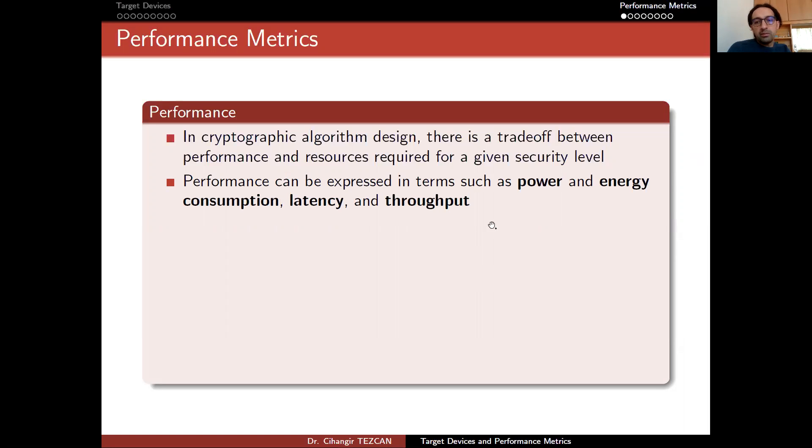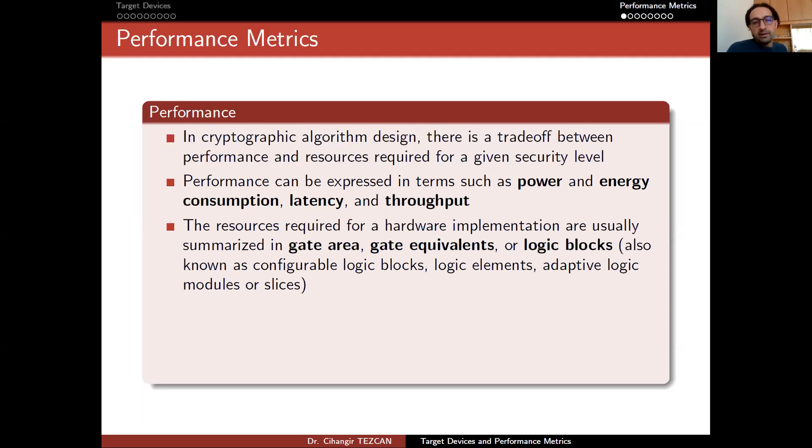All of these are important for lightweight cryptography and for the devices we're going to use in the Internet of Things. The resources required for hardware implementation are usually summarized in gate area, gate equivalents, or logic blocks, also known as configurable logic blocks, logic elements, adaptive logic modules, or slices.